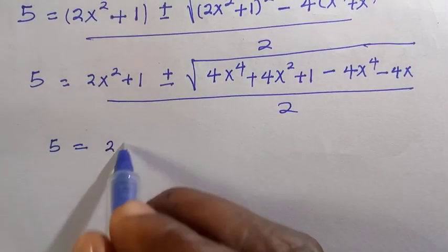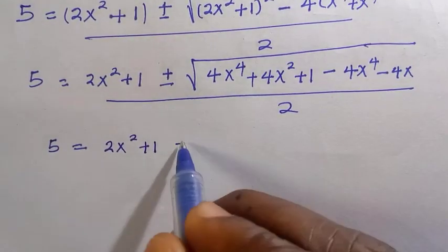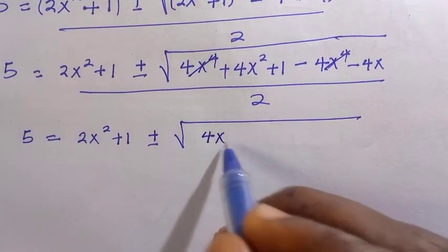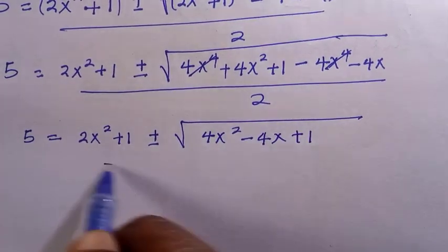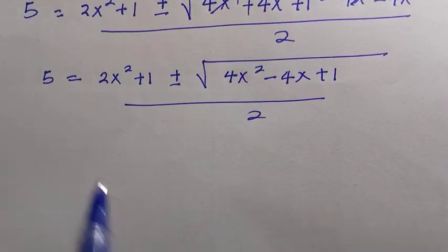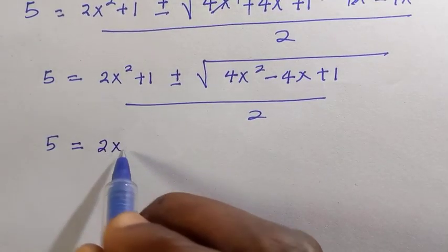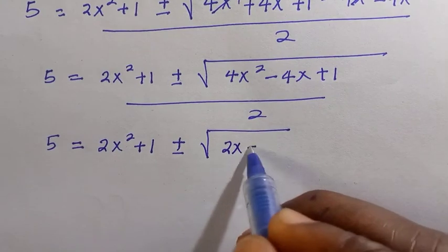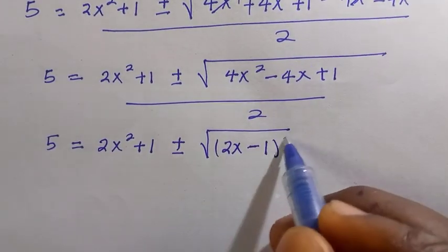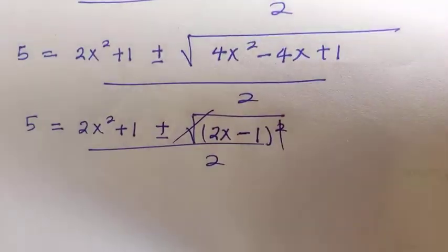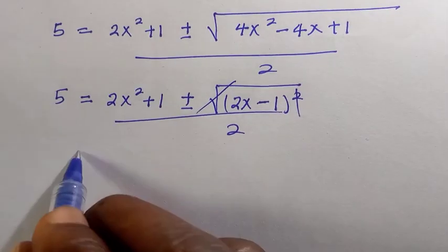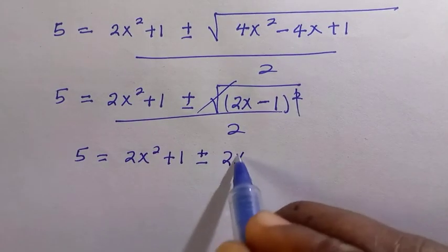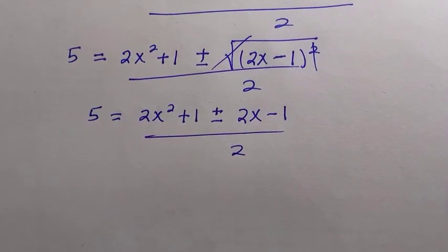So 5 equals 2x² plus 1, plus or minus the square root of — after the 4x⁴ terms cancel — 4x² minus 4x plus 1, all divided by 2. We then recognize that 4x² minus 4x plus 1 contracts to (2x minus 1)², so 5 equals 2x² plus 1 plus or minus (2x minus 1), all divided by 2.